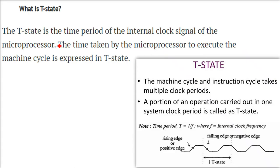The machine cycle and instruction cycle take multiple clock periods. They may take one, they may take two or multiple. The T-state is the portion of an operation which is carried out in one system clock period.